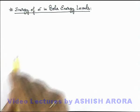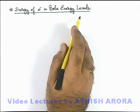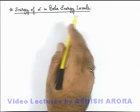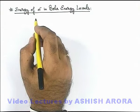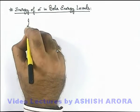Now let us study about the energy of electron in Bohr energy levels. For Bohr energy levels or various orbits of an atom, here we can see that...